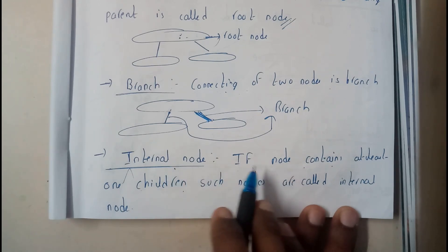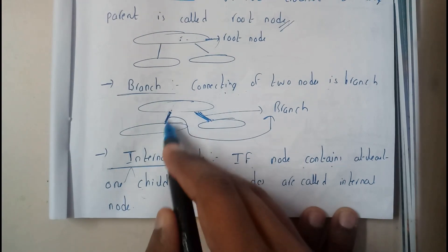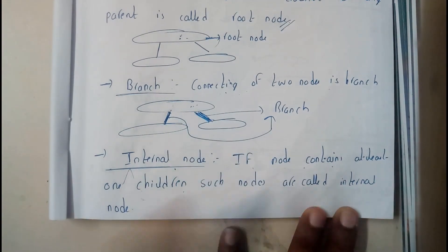Okay, so what is an internal node now? An internal node is nothing but if a node contains at least one children. It should have at least one children. Hence, this is called as an internal node. If you want an example, I have just drawn a small example here.